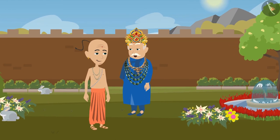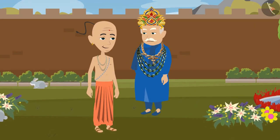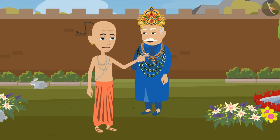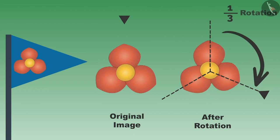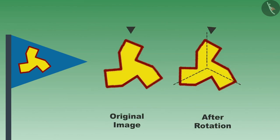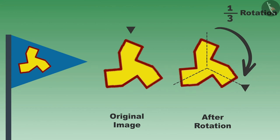Tenali Ramaji, you have solved the puzzle of locks with your wisdom. Can you name some more objects that will remain the same even after one-third rotation? Yes, my lord, there are many objects and shapes like this. For example, look at the image on the flag — this image will remain the same even after rotating it by one-third. Similarly, look at the other flag also; this image too will remain the same after rotating it one-third.